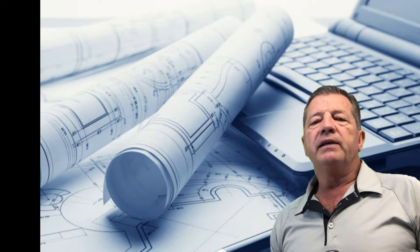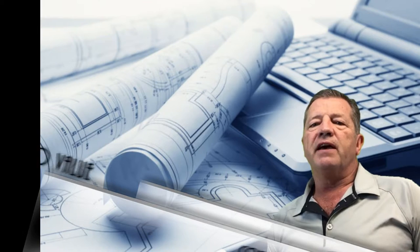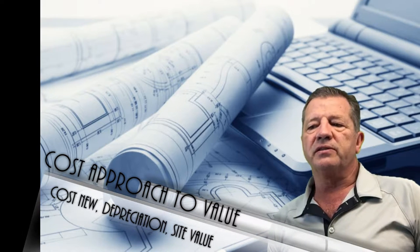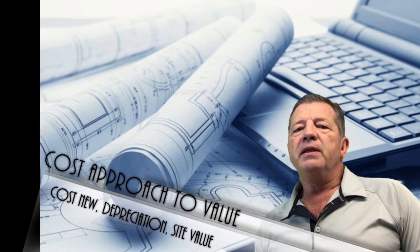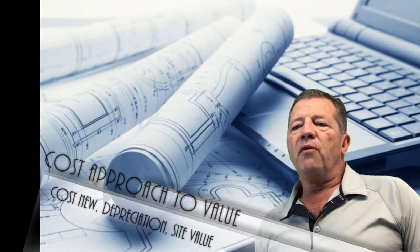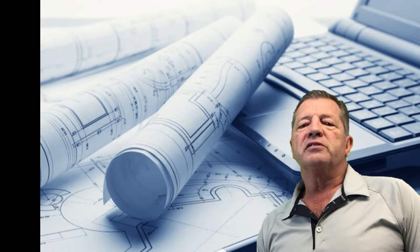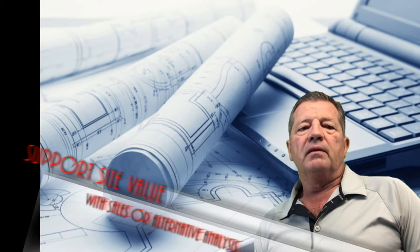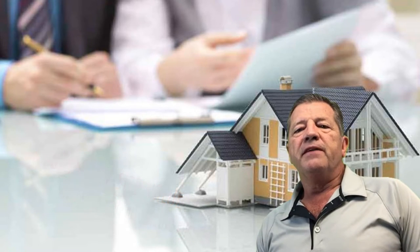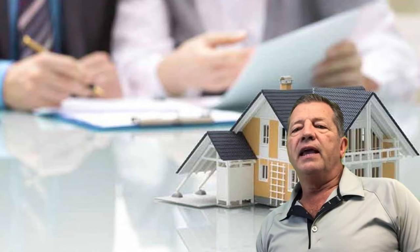Number three on the list is the cost approach. The cost approach is made up of three basic components: the site value, the replacement cost new, and the measure of depreciation or obsolescence. In developing the opinion of site value when the Fannie Mae form is being used, the appraiser is required to support the opinion of value. Oftentimes, a site value is provided with no discussion or support. The appraiser should provide the sales used in developing the opinion of site value, and if an alternative method was used, that should be discussed and explained to the client.